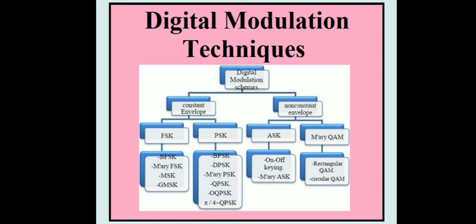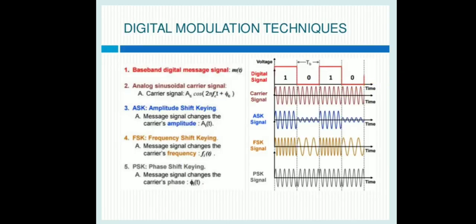The digital modulation techniques are divided mainly into two parts: constant envelope and non-constant envelope modulation techniques. The constant envelope modulation techniques consist of FSK — frequency shift keying — and phase shift keying. While the non-constant envelope consists of ASK — amplitude shift keying — and M-ary QAM, that is quadrature amplitude modulation technique. In digital modulation, the information signal is in digital form while the carrier signal is in analog form. So according to the logic level of the digital information signal, the amplitude, phase, or frequency of the analog carrier signal changes.